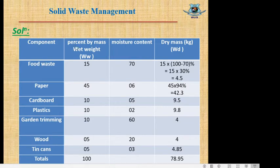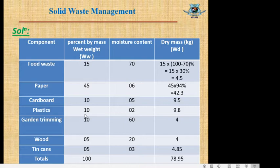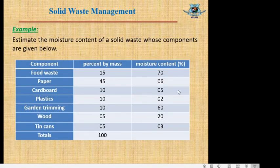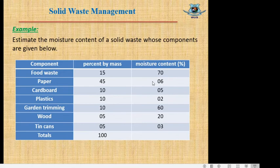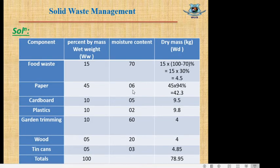The percent by mass values are the moist weight — we have picked this column from the question data. The moisture content values in percentage are also given: food waste is 70%, paper is 6%, and similarly for others. We already have Ww from the question data, and now we need to calculate Wd, which means the dry mass.